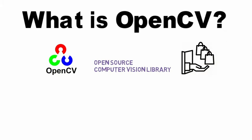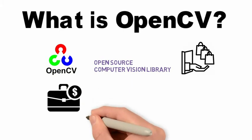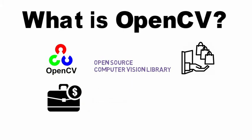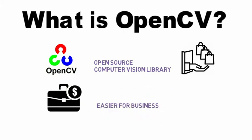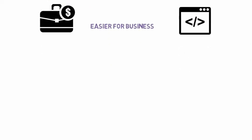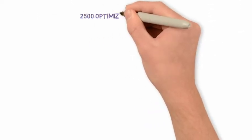The open source nature of the library makes it easier for businesses to modify their code. There are tons of different algorithms in OpenCV — approximately 2500 algorithms — which include classical and state-of-the-art algorithms.